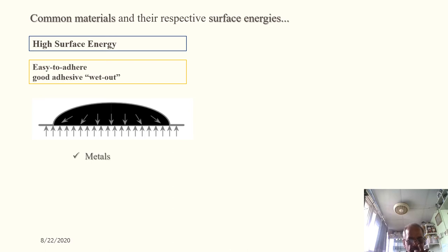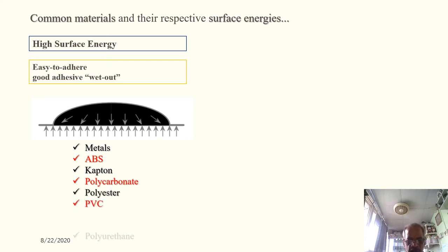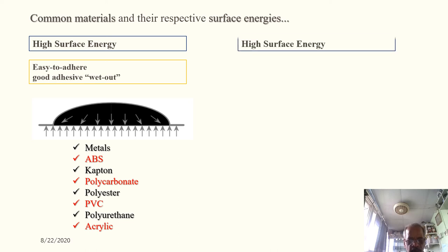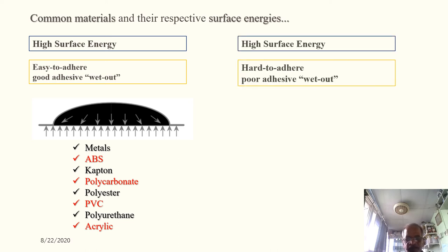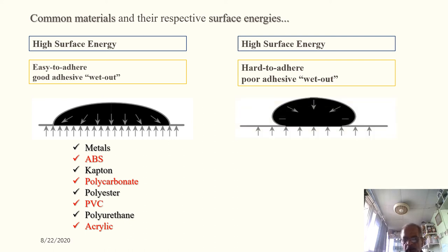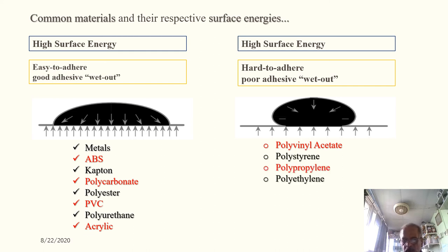High surface energy materials — which are easier to adhere to — include metals, ABS, polycarbonate, polyester, PVC, polyurethane, and acrylic. Low surface energy materials — which are harder to adhere to and may cause poor bonding — include polyvinyl acetate, polystyrene, polypropylene, polyethylene, acetal, Tedlar (PVF), EVA, Teflon, and water-based paints.